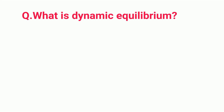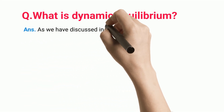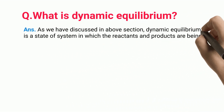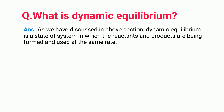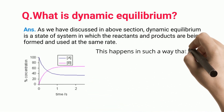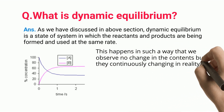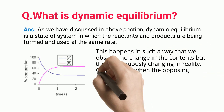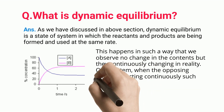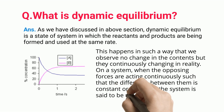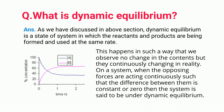What is dynamic equilibrium? As discussed, dynamic equilibrium is a state of a system in which the reactants and products are being formed and used at the same rate. This happens in such a way that we observe no change in the contents, but they are continuously changing in reality. When opposing forces act continuously on a system such that the difference between them is constant or zero, the system is said to be under dynamic equilibrium.